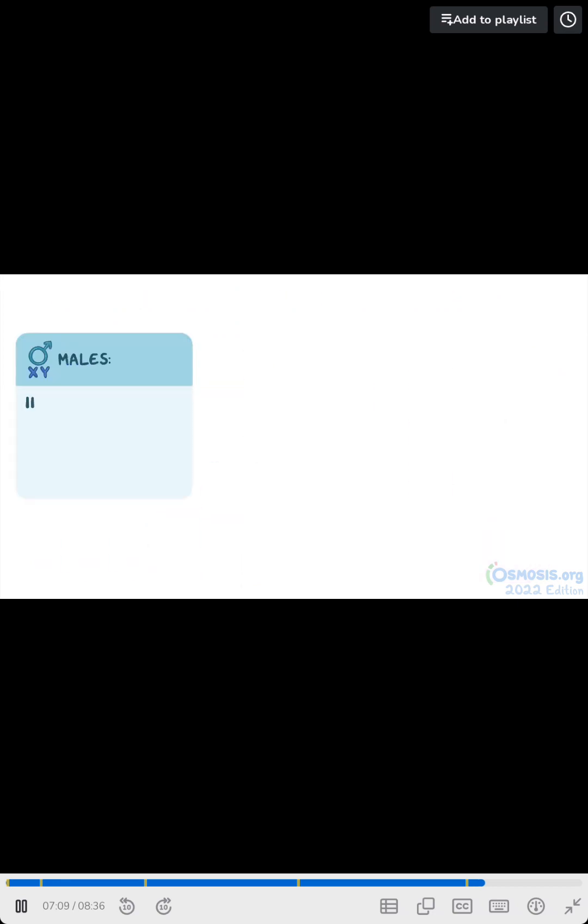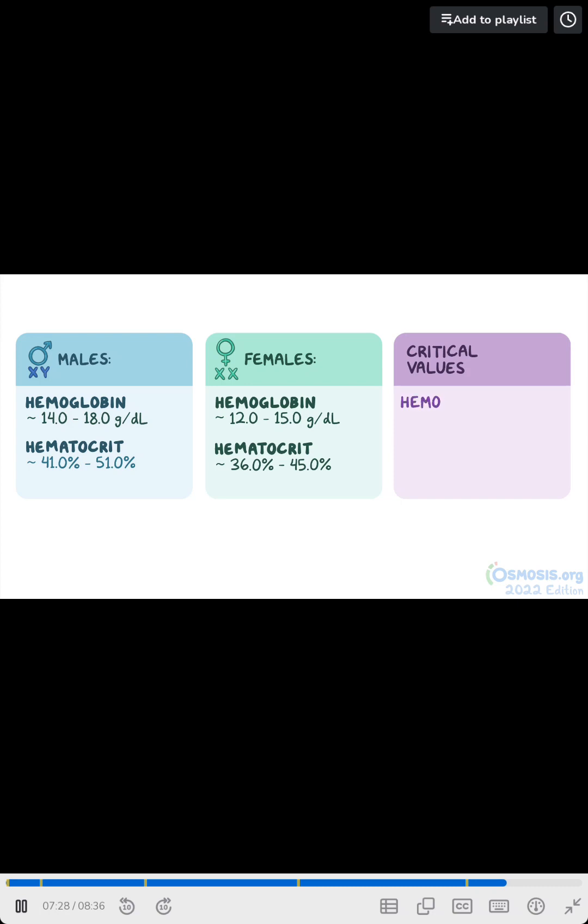Normal hemoglobin values for males range from 14.0 to 18.0 grams per deciliter, and 12.0 to 15.0 grams per deciliter in females. A normal hematocrit ranges from 41.0% to 51.0% in males, and 36.0% to 45.0% in females. Critical values include hemoglobin below 7.0 grams per deciliter, and a hematocrit of more than 65% or less than 21%.